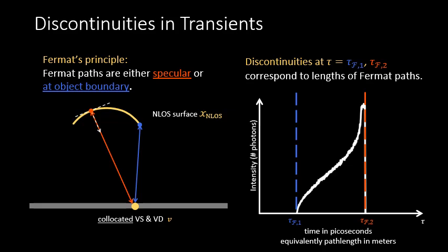The second kind are paths corresponding to points on the boundary of the non-line-of-sight surface. For an object of general reflectance, there will be some photons that travel along these Fermat paths, producing the discontinuities in the transient. There will also be photons that travel along paths that are not Fermat, producing the continuous parts of the transient.